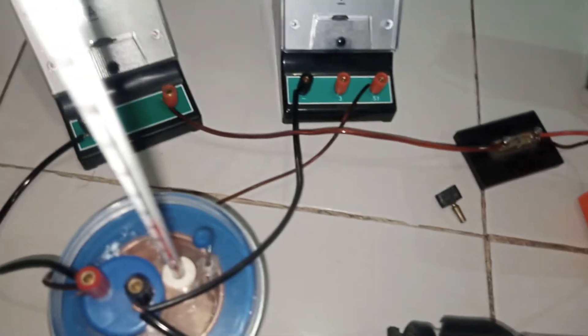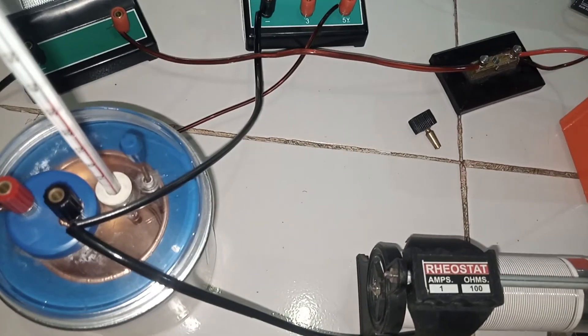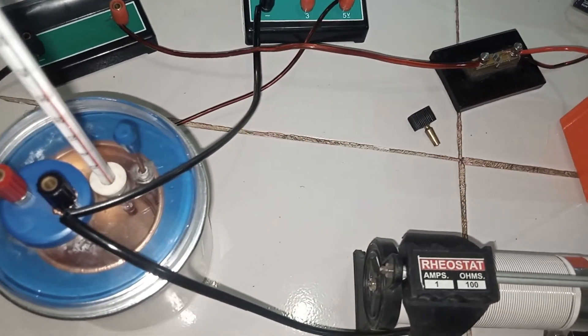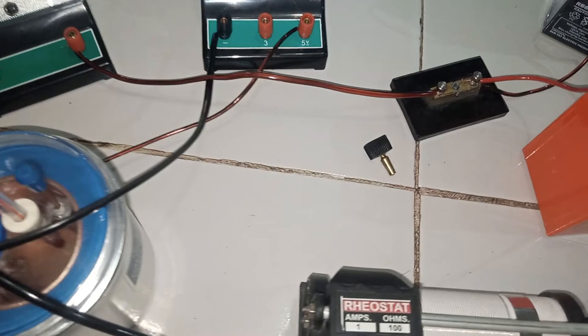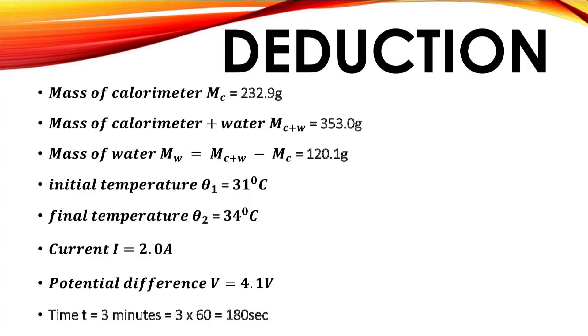We will now tabulate all these values that we have gotten and then use it to deduce the specific heat capacity of this particular liquid. Here is the summary of all we have done so far.